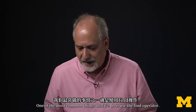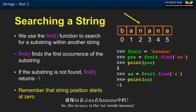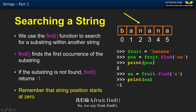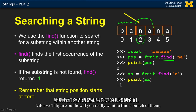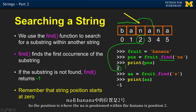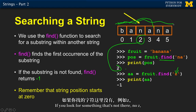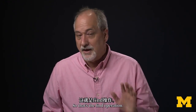One of the most common things we do is use the find method. It's kind of like `in`, except instead of returning true or false, it returns where it found the substring. So `fruit.find('na')` goes through and says: there's an 'na' starting at position 2. It finds the first occurrence. If you look for something that's not there — like 'z' in banana — you get back negative one, which is our flag indicating it was not found.